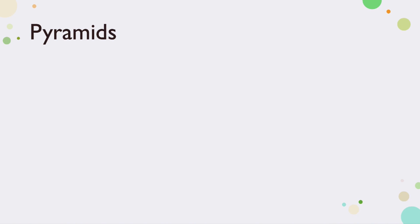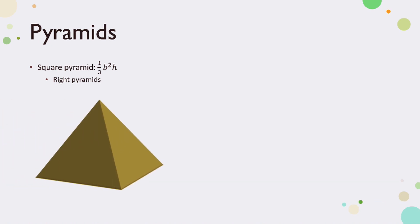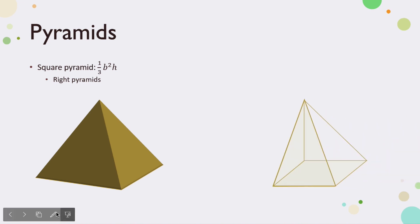Let's start with pyramids. The formula for the volume of a square pyramid is 1/3 b² times h. The pyramid you're probably most familiar with is a right pyramid, where the vertex of the pyramid is directly above the center of the base, like this. To prove this formula, we're going to be using a different configuration of a square pyramid, where the vertex is directly above one of the corners of the base, like this.